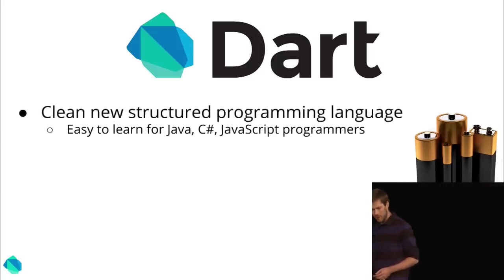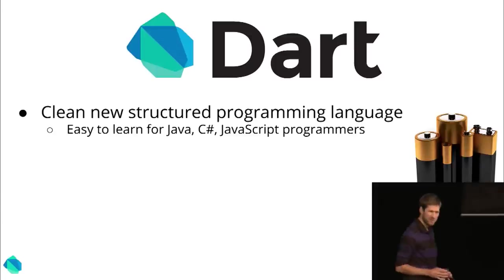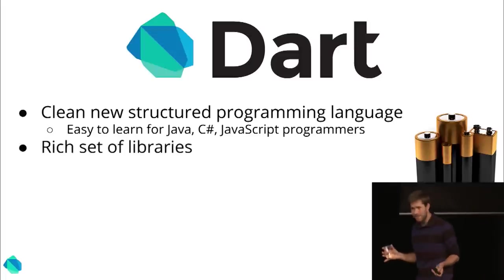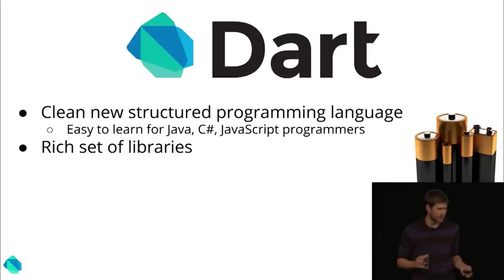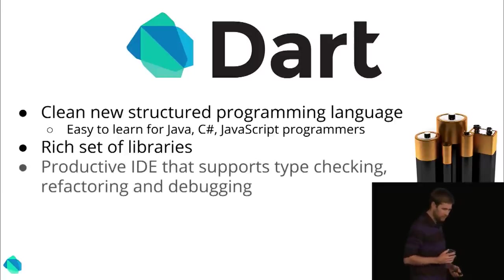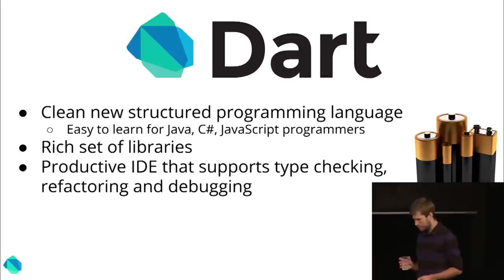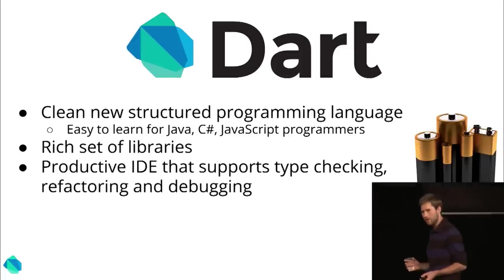You may know Dart as a language, and it is a language that will be very familiar to you if you know JavaScript — I guess you do — or Java, C Sharp. It has a rich set of libraries: numbers, dates, collections, asynchronous programming. It has a productive IDE, a stripped-down version of Eclipse, that supports all the things Java developers have always been used to: type checking, refactoring, debugging, and soon profiling.